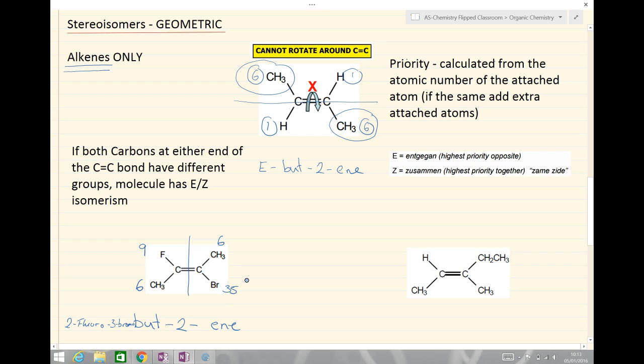We don't worry about the hydrogens, because we're just dealing with those numbers first. We then go to the right-hand side, we look at the carbon here, so we've got 6, and the bromine is 35. So, our highest priority are our fluorine and our bromine in this instance. They are on, as I draw my dotted line through that double bond, opposite sides of the double bond. So, this is E-2-fluoro-3-bromo-but-2-ene.